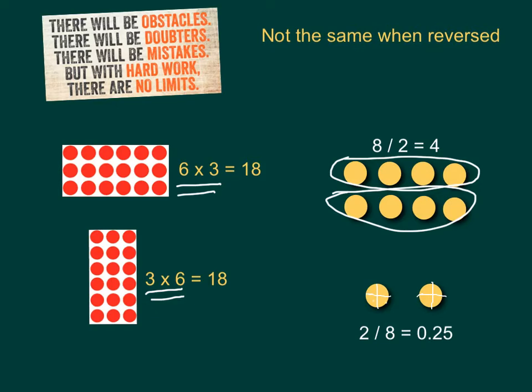I've got 1, 2, 3, 4, 5, 6, 7, 8 quarters. So, 2 divided by 8 is actually 0.25. I can see the order of the numbers here changes the answer.